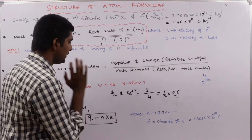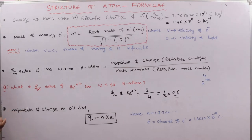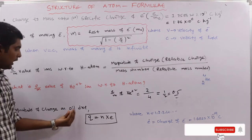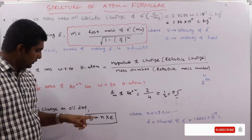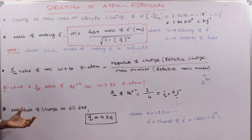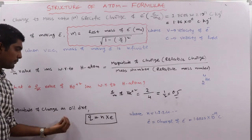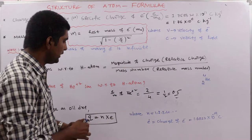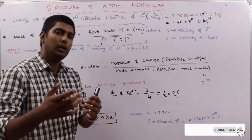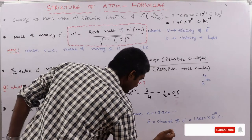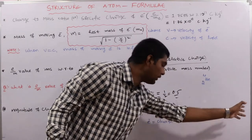In Millikan's oil drop experiment, the magnitude of charge on the oil drop q = ne, where n is any integer (1, 2, 3, 4…) and e is the charge of the electron, equal to 1.602 × 10⁻¹⁹ coulombs.